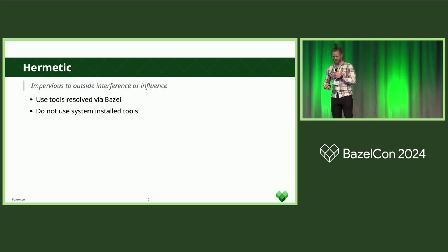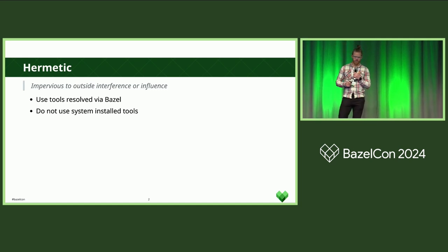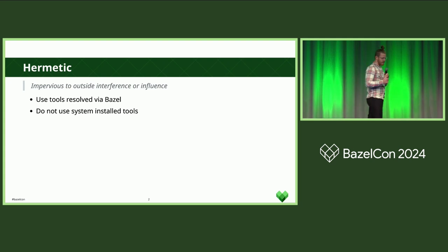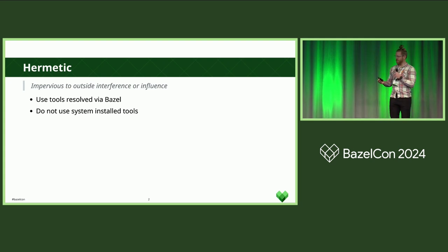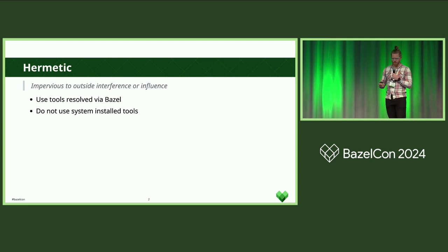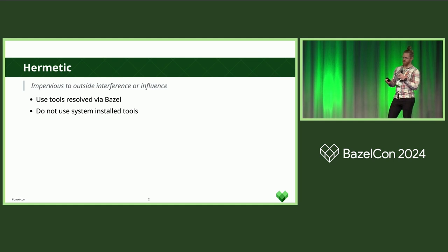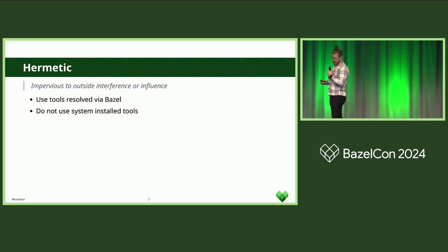Then someone comes along and says they need to use sed, which is written in C and C++, and you need to get that and have a toolchain around it. You think: Bazel can build C and C++ projects, we will build that. But then you realize you need a hermetic CC toolchain. In the Bazel mod there is a hermetic CC toolchain. It is going well — you have got that all built — and then they want to run it in a repository rule, so you need to have it pre-built and then download it.